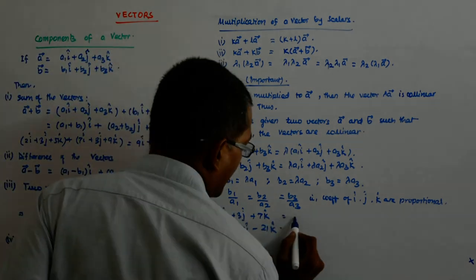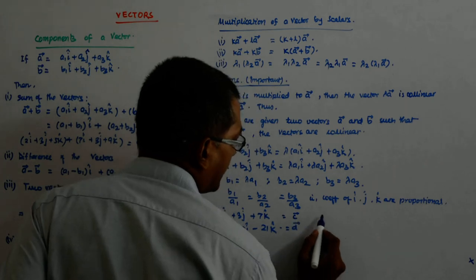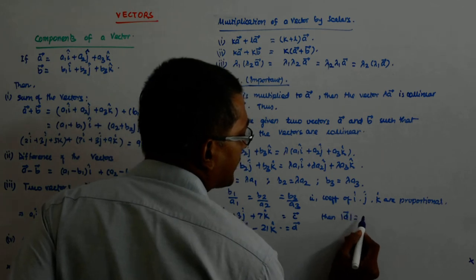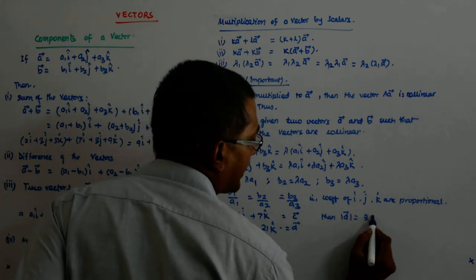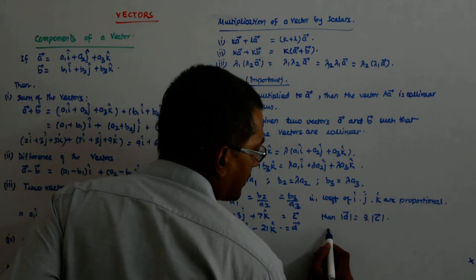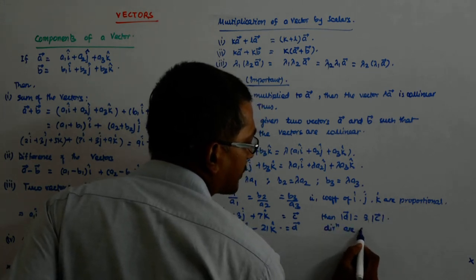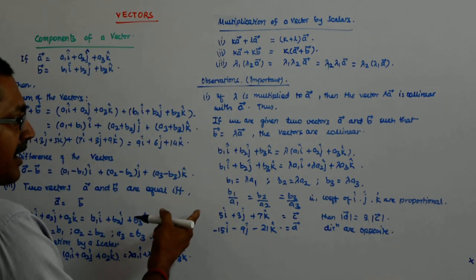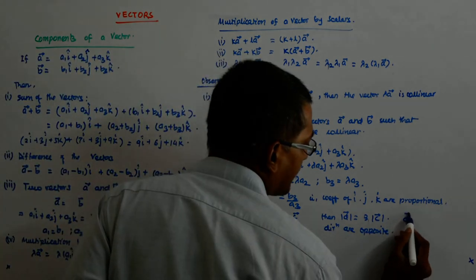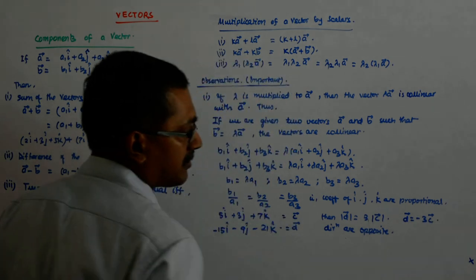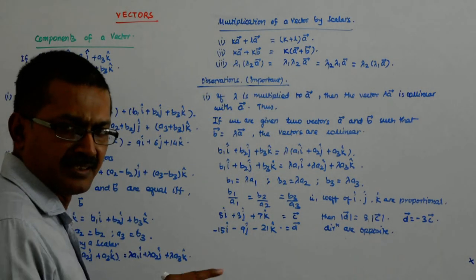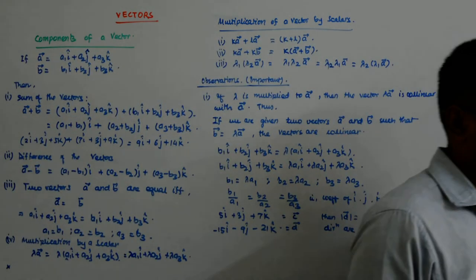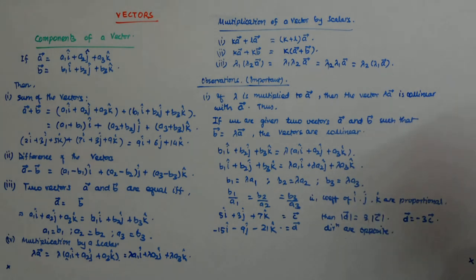They will be antiparallel and collinear and the length of this will be 3 times the length of this, because it is multiplied 3 times. So, let us say, if this is c and this is d, then mod d is equal to 3 times mod c. Directions are opposite. Here, I have used what? Because d is equal to minus 3c. So, that minus has actually reversed the direction. That 3 has actually made the length thrice.